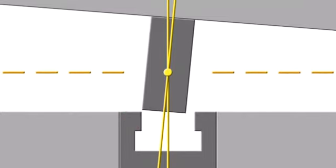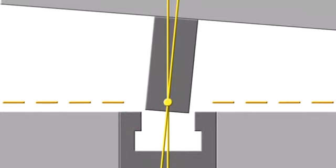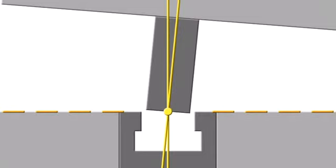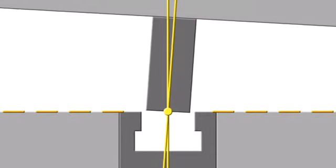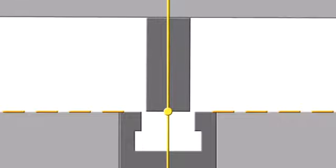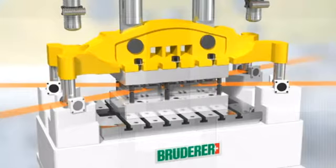The benefits of Bruderer's guide system, with its multiple ram support at strip level, are self-evident. Minimum wear of cutting punches and dies, no broken punches, and no interruptions to production due to re-grinding operations. All these guarantee maximum tool life.